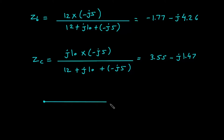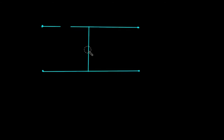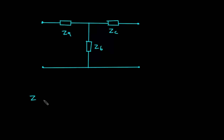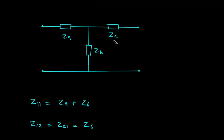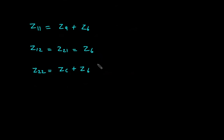Now again we will redraw the network. This time it will be in T form, or we can say in star form. So here it will look like this: this will be our ZA, ZB, and ZC — this is ZC, this is ZA, this is ZB, and this is ZC. Now we have to find Z parameters for this two-port network.